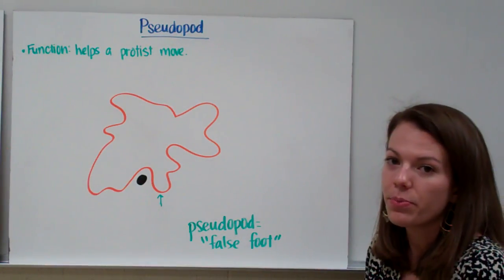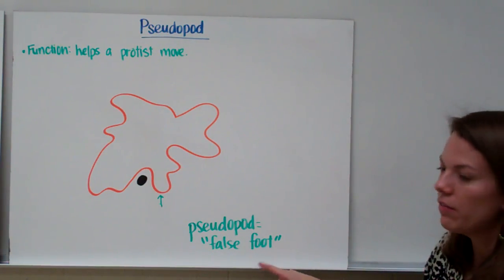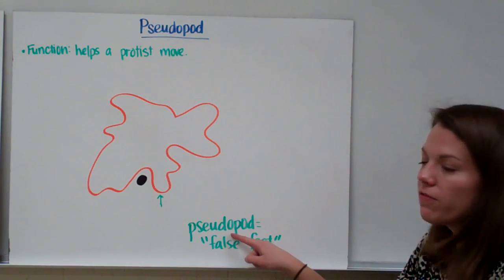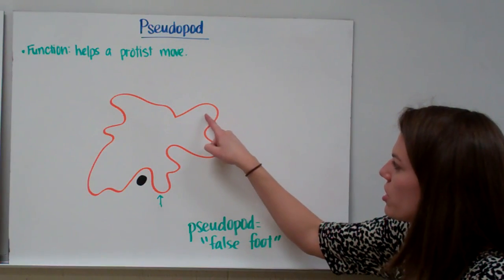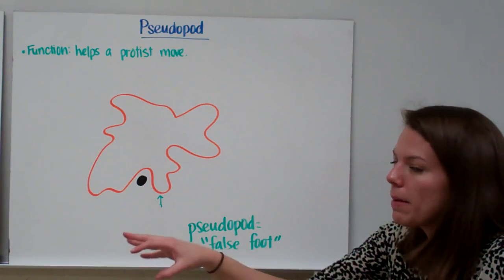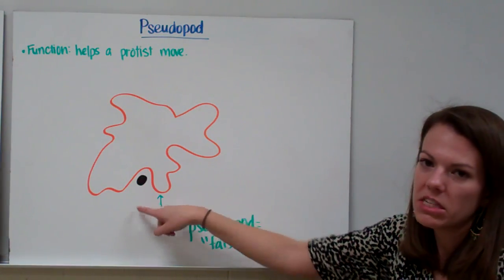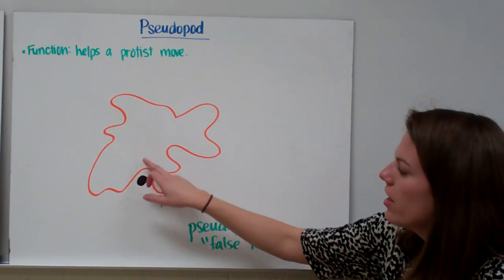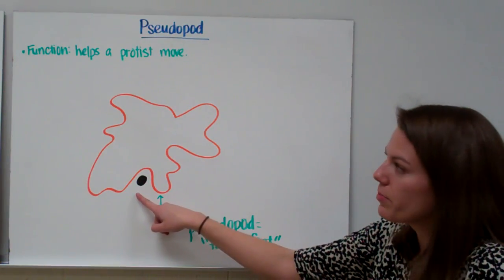Another adaptation that helps a protist to move is called a pseudopod. Pseudopod literally means false foot — if you've ever heard of a pseudonym, that's somebody's false name. Pseudo means false and pod means foot. The pseudopod are little projections that a protist uses to move around; they kind of look like blobs. Sometimes the pseudopod can come together to actually engulf and eat different materials, such as bacteria.